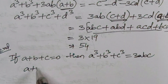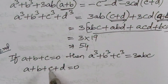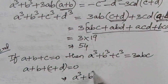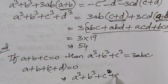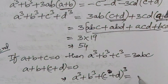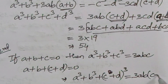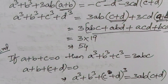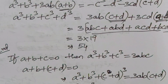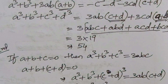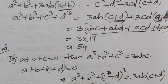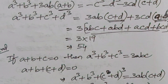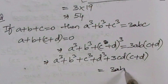Now, a + b + c + d is given as 0. I am taking it as one term. That implies a³ + b³ + (c + d)³ = 3ab(c + d), according to the identity. If you expand this, you get a³ + b³ + c³ + d³ plus additional cross terms, equal to 3ab(c + d).